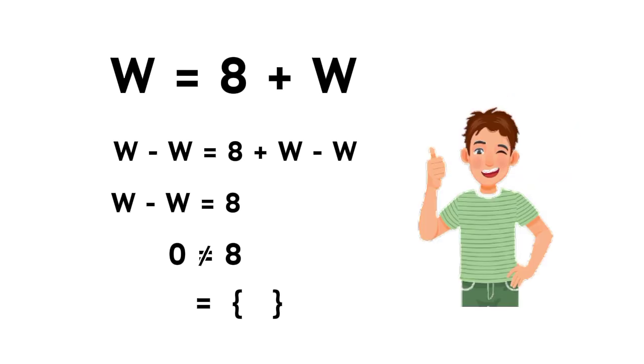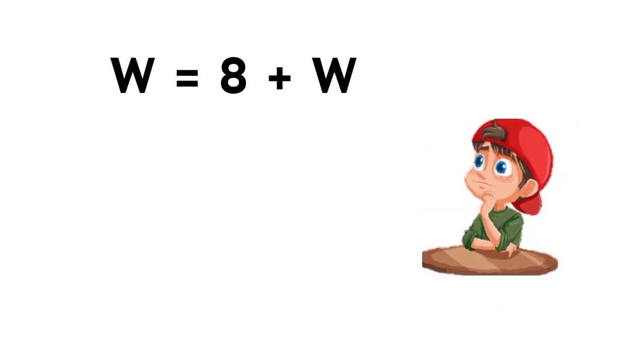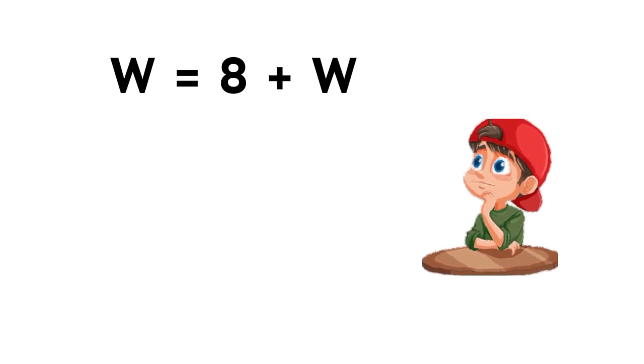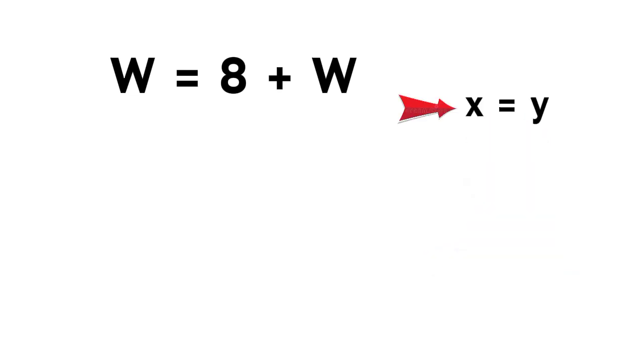But hold on, let's try another method, just to see the full picture. We start again with W equals 8 plus W. Now as we know, if X equals Y, then X squared equals Y squared. So we take the square on both sides.